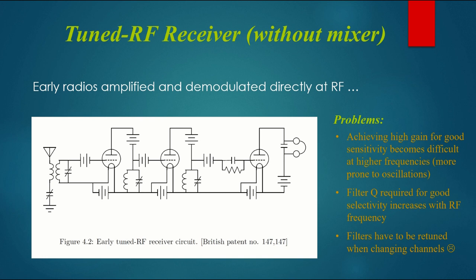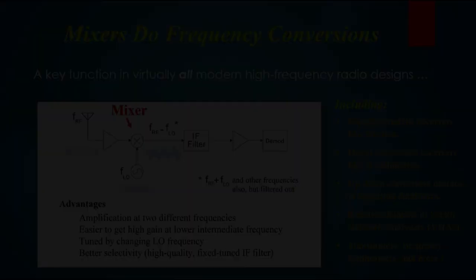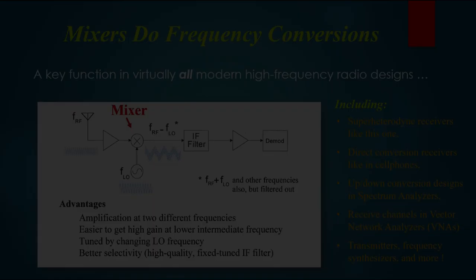And that's not a receiver, although they did make use of that in some regenerative receivers. Another problem is that the filter quality factor, the sharpness of the filter, became difficult to get at very high frequencies. And finally, in order to get any selectivity at all, we needed several filters. And you had to retune those every time you change the channel.